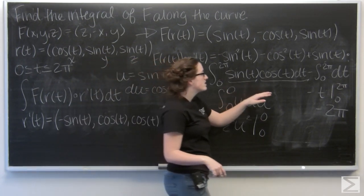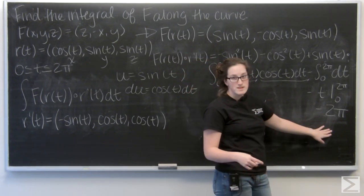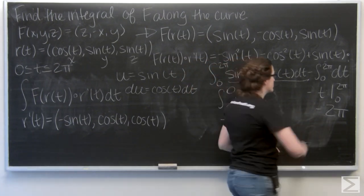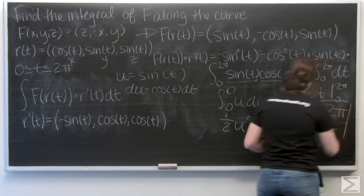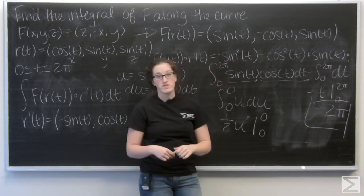So the only part of this integral that actually has a value is the second half, as negative 2 pi. So that's my answer for the integral of f along this curve.